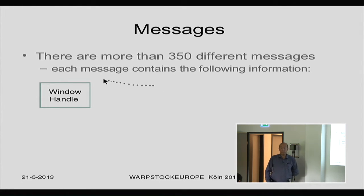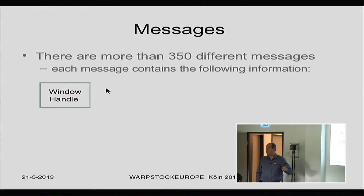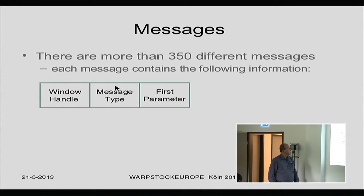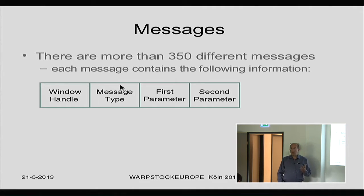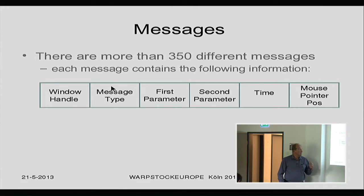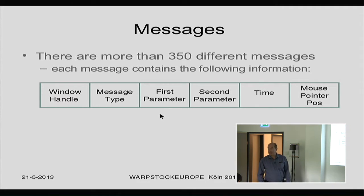Each message contains the following information: the window handle — in other words, which window are we talking about; the message type referring to that window; two parameters which are different for each message; the time that the message occurred; and where the mouse pointer was when it occurred. A subset of each message is sent to a procedure, and the procedure should handle that message — it does not include the time and the mouse pointer.